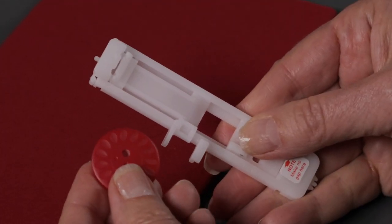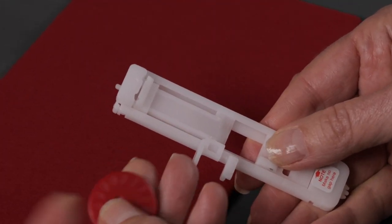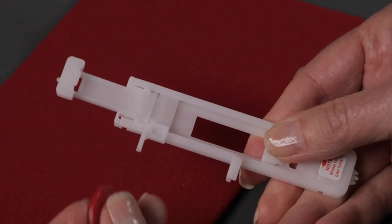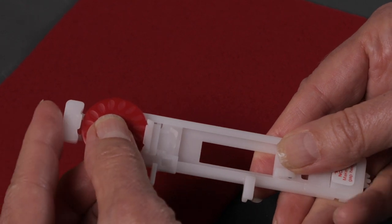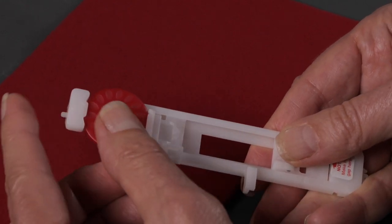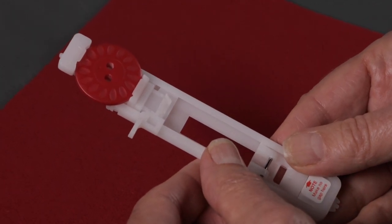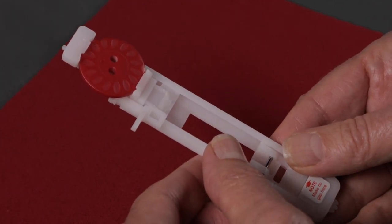Next, we're going to place our button in the buttonhole foot. To do that, I'll open up this slider at the back of the buttonhole foot, place the button in position, and close the slider. By placing the button in the back of the buttonhole foot, the machine will know how to make the buttonhole exactly the right size for that button.